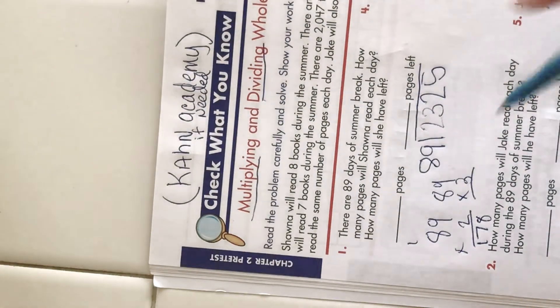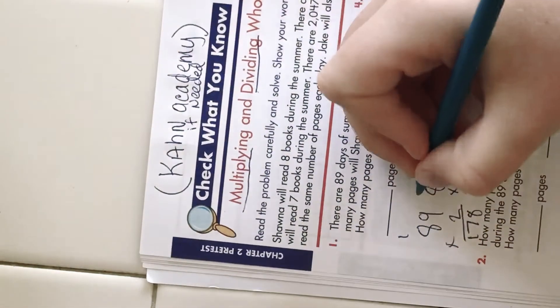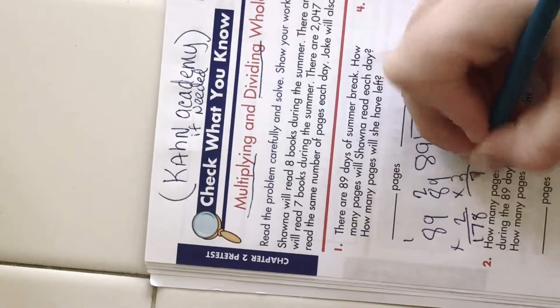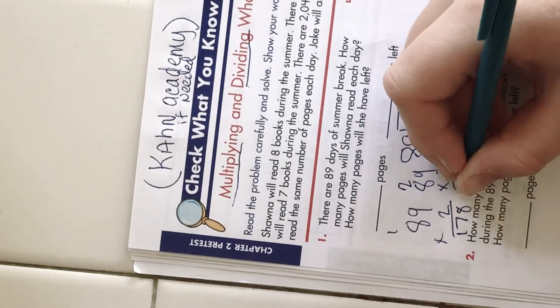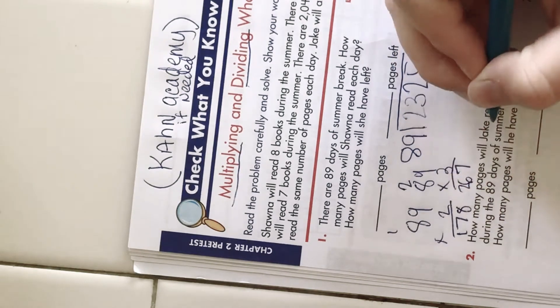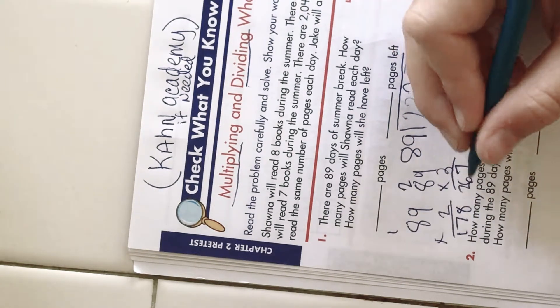Let's do 89 times 2 — that's 178. Then let's try 89 times 3. Three times 9 is 27, and 3 times 8 is 24, plus 2 is 26 — so 267. That's too much.